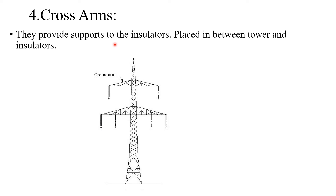The fourth important component needed for overhead transmission systems is cross arms. Cross arms provide support to the insulators, placed between the tower and insulators. Cross arms connect the insulators to the transmission tower and are essentially a part of the transmission towers.